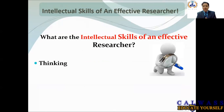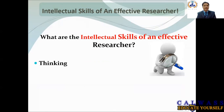The first intellectual skill required of an effective researcher is thinking — specifically critical thinking. In critical thinking, you try to understand a phenomenon by observing critically, trying to understand why the phenomenon is happening the way it is. You think like a researcher and try to dig out the problem, to understand what the problem actually is.